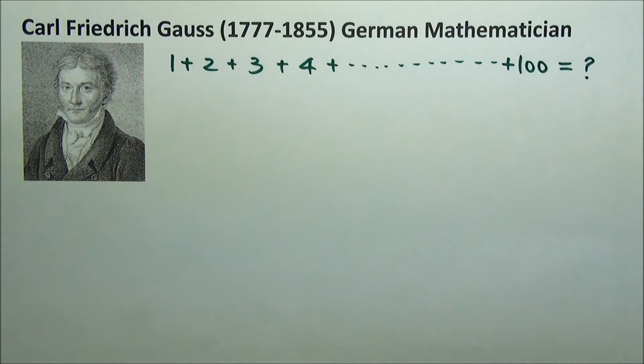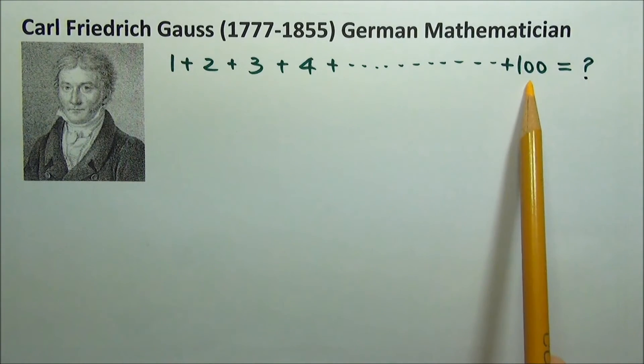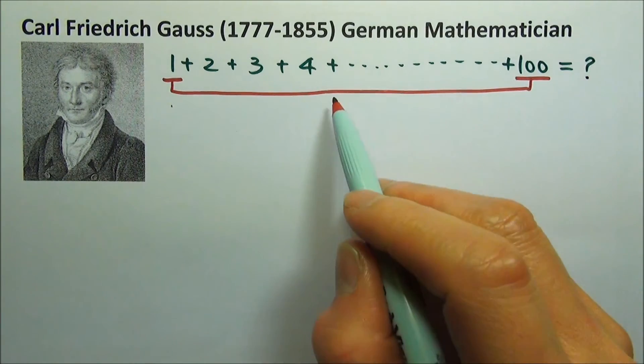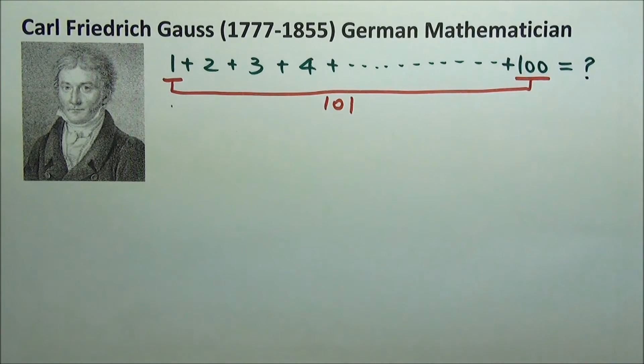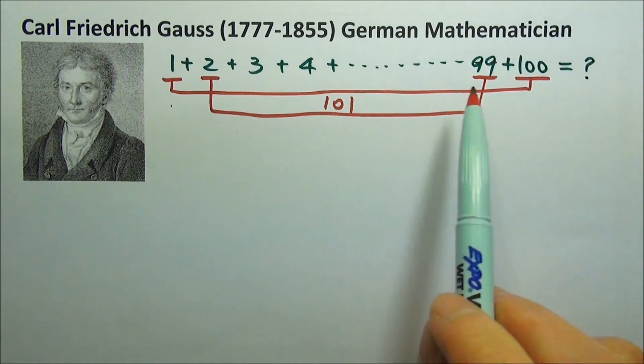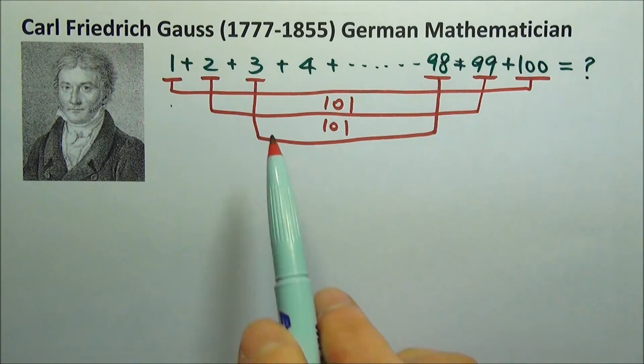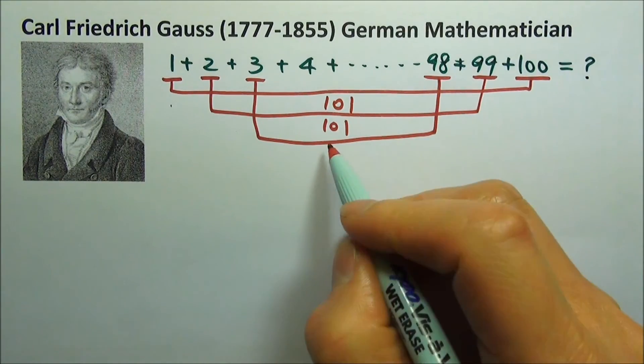How did Gauss do it? He paired the numbers up. How much do we get when we add 1 and 100? 101. How about 2 and 99? Also 101. And 3 and 98? 101 again.